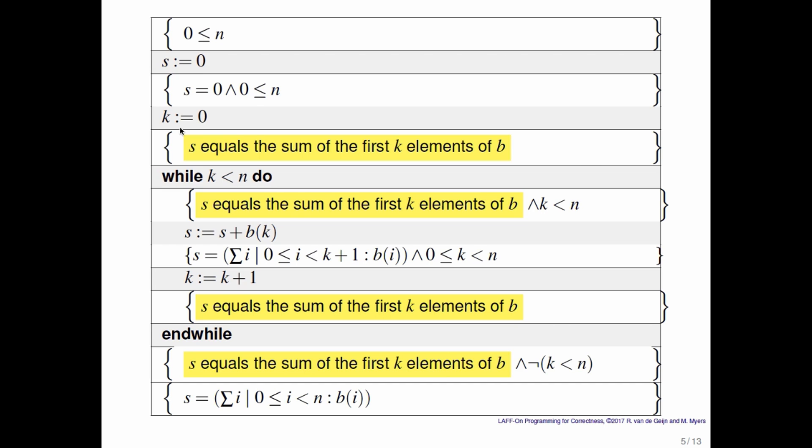And then what we reasoned was that if at the top of the loop s contained the sum of the first k elements of b, then the update in the loop put us back into a situation where s equals the sum of the first k elements of b. And notice that along the way k was incremented by 1. Now that's very much like an inductive hypothesis, s equals the sum of the first k elements of b. And then the inductive step, where you show that if it's true for k, then it's also true for k plus 1.